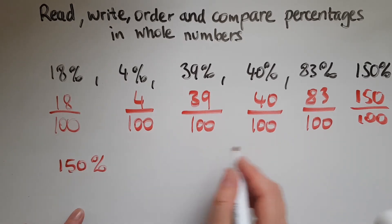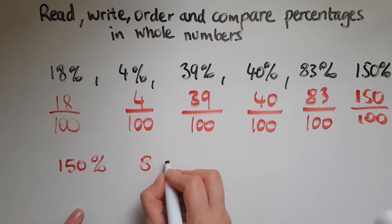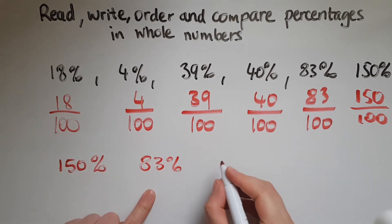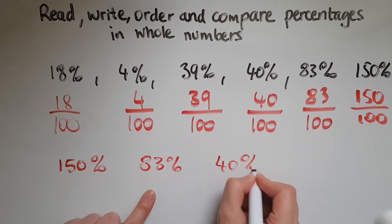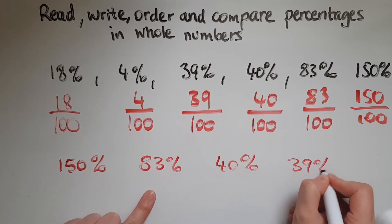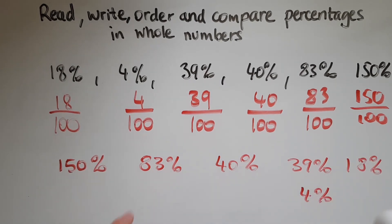And then 83 percent would be the next biggest one, because 83 is the next biggest number. And then we'd have 40 percent, 39 percent, 18 percent, and 4 percent finally. So this is how to compare them, and this is how to write them and read them.